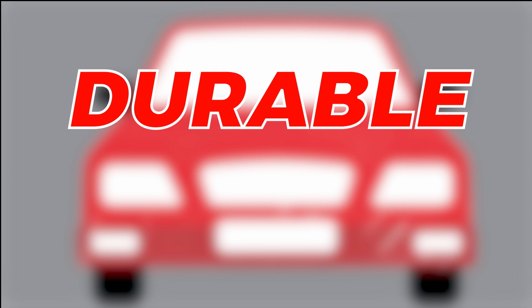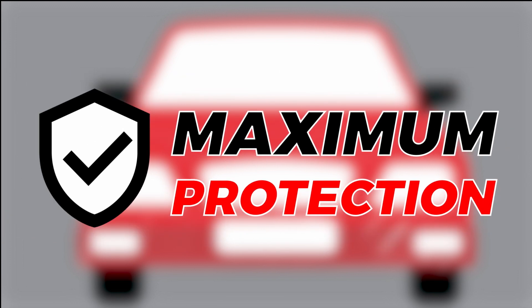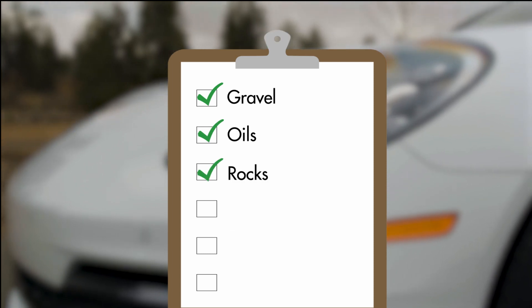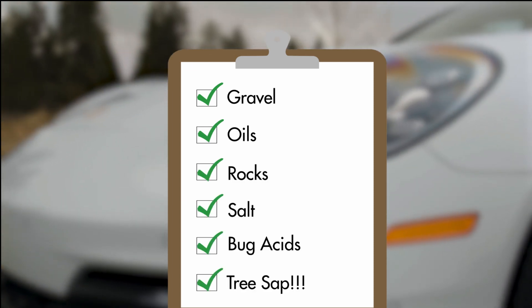Expel is a highly durable urethane coating that provides maximum protection against unsightly damage from gravel, oils, rocks, salt, bug acids, and even tree sap.